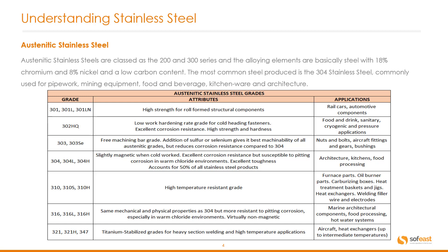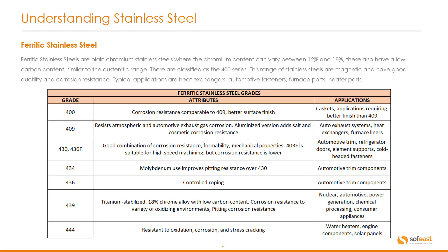There's a full list of the 300 series in the table below along with the attributes and typical applications for each grade. One of the most commonly used stainless steels in this series is 316, which has similar mechanical and physical properties to 304 but more resistance to pitting corrosion, especially in warm chloride environments. It is also virtually non-magnetic and is perfect for applications in marine architecture, food processing, and hot water systems.